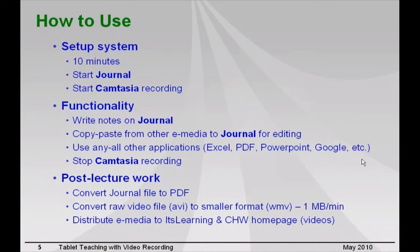After the lecture, I convert the Journal format file to a PDF and post it electronically to the students. Then I make a conversion of the raw video file — which in my setup is an AVI file — into a much smaller format, about one-tenth the size, such as WMV. Using WMV, this ends up with a file size of approximately one megabyte for every recorded minute. That video file is then distributed to students via the internet for FTP downloading.